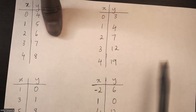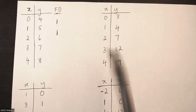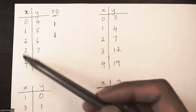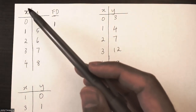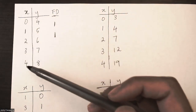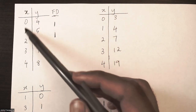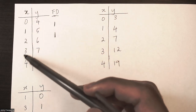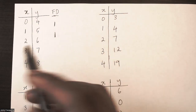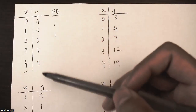The first thing you want to do when looking at a table of values is look at the x values and make sure they are all increasing or decreasing by the same amount. In this case all my x values are increasing by one, so my check is good.